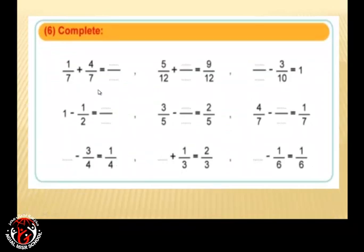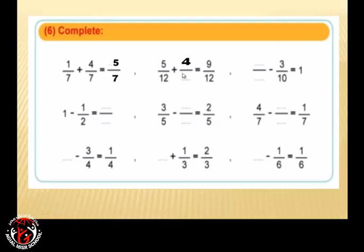1 over 7 plus 4 over 7: 1 plus 4 equals 5, and the denominator stays 7. Next: 5 plus what equals 9? After 5 comes 6, 7, 8, 9 — so 5 plus 4 equals 9. We put the same denominator: 12 and 12, so we write 12 here as well.